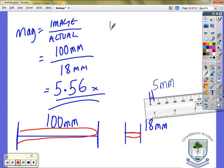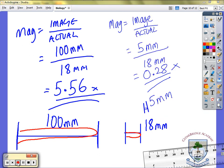And now we're going to work out the magnification again. Mag equals image over actual equals 5 millimeters over 18 millimeters equals 0.28 times. Quick point.